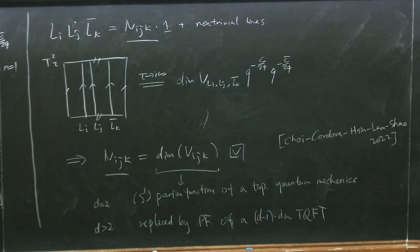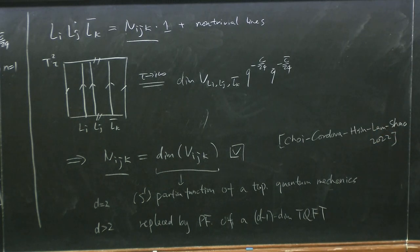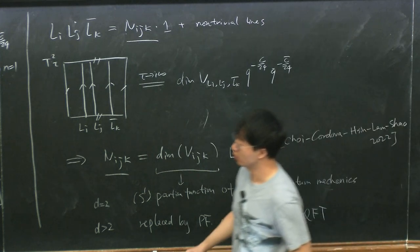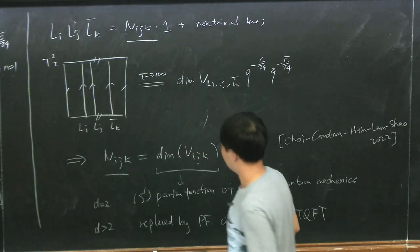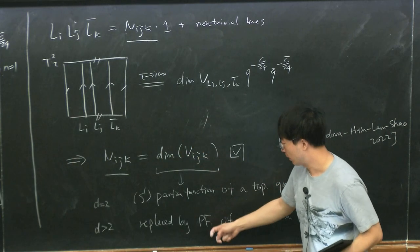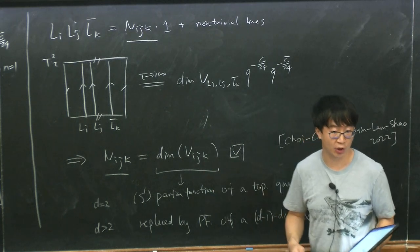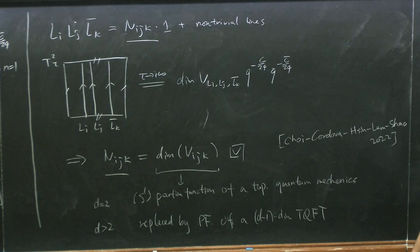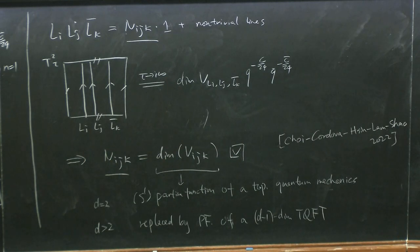This generalizes: for d greater than 2 with non-invertible symmetries of co-dimension 1, this fusion coefficient will be replaced by a partition function of a (d−1)-dimensional TQFT. TQFTs in higher dimensions are much more interesting than in one dimension, and that leads to interesting structures and different properties for this kind of fusion product. In particular, the partition function is no longer required to be an integer on a general three-dimensional manifold.